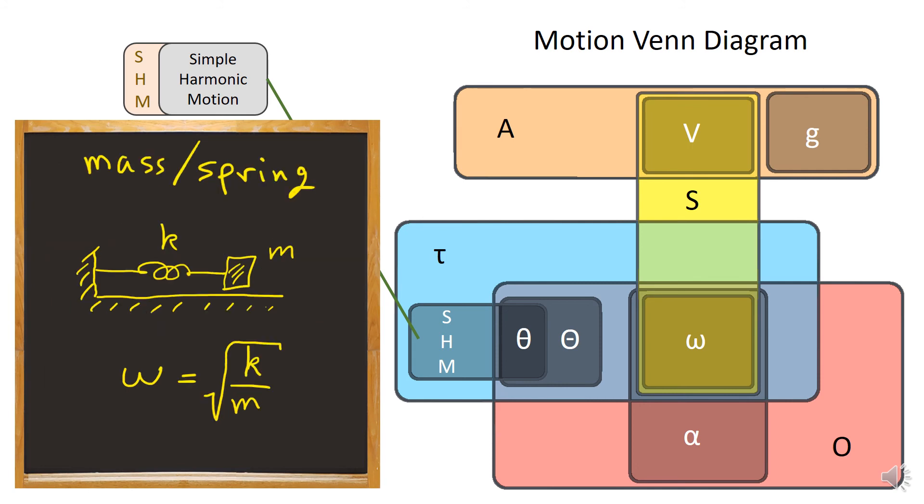The most common case of simple harmonic motion is the mass and spring. In that case, the angular frequency is the square root of the Hooke's law spring constant divided by mass.